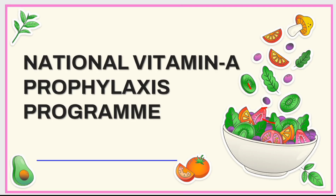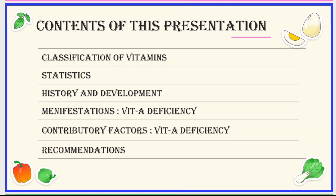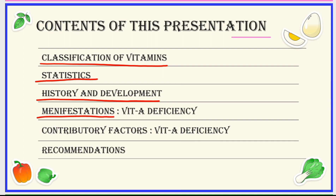Hello everyone, today we will be discussing about the National Vitamin A Prophylaxis Program. This will be our schema presentation. Firstly, we will be covering the classification of vitamins, then some statistics related to vitamin A and vitamin A deficiency, history and development of the Vitamin A Prophylaxis Program, various manifestations of vitamin A deficiency, contributing factors, and finally the recommendations.